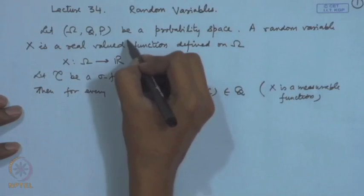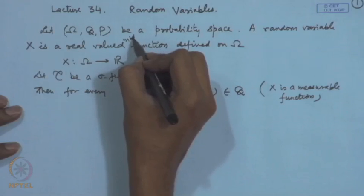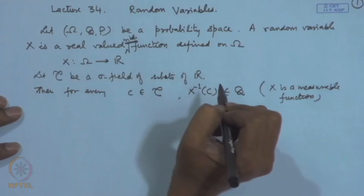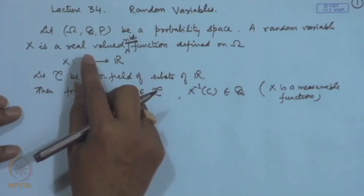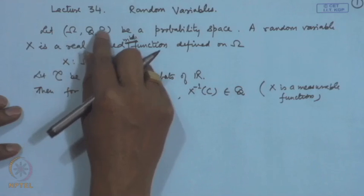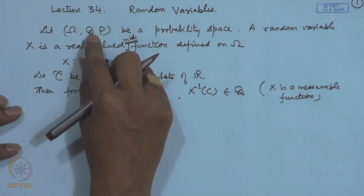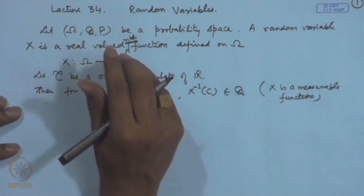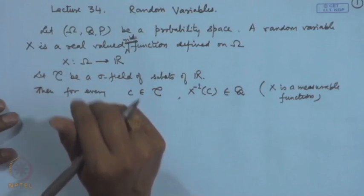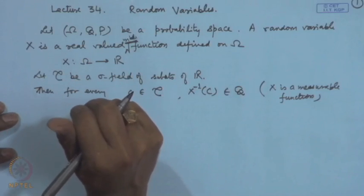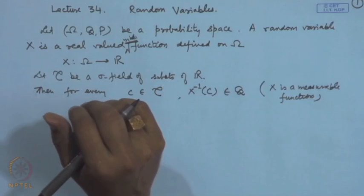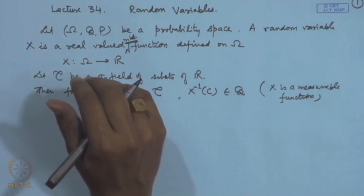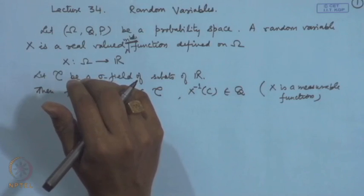We qualify X as a real-valued measurable function, because whatever values the random variable takes, the inverse image of that should have a corresponding element in the set of events — in the class of events — so that the corresponding probabilities can be discussed. Without giving too much theoretical detail, let us discuss the probability distributions of random variables and how we describe them, then look at the classification of random variables.